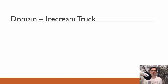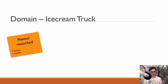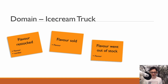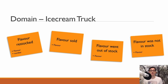In our first iteration, these four domain events are the core of our domain and our business logic. The first event is that a flavor like vanilla or strawberry was restocked in our system. The second event is the flavor sold event, meaning we actually sold one flavor from our ice cream truck. The third event is that the flavor went out of stock — we sold the last of a vanilla or strawberry flavor.